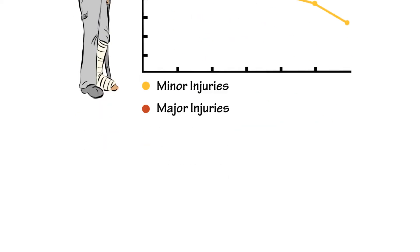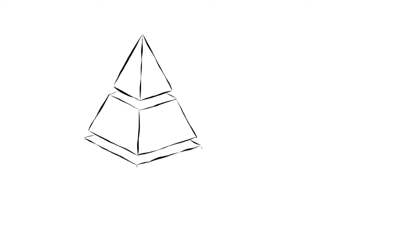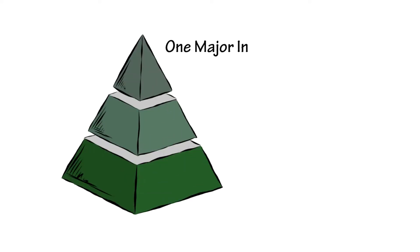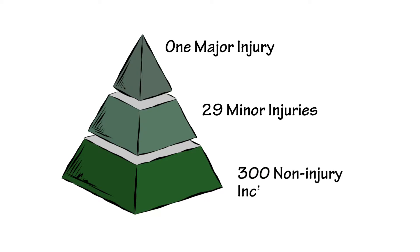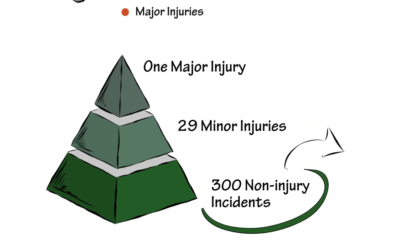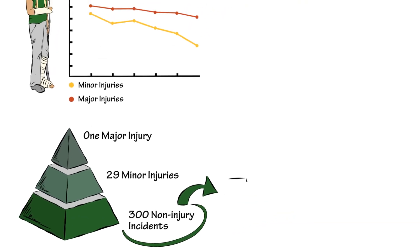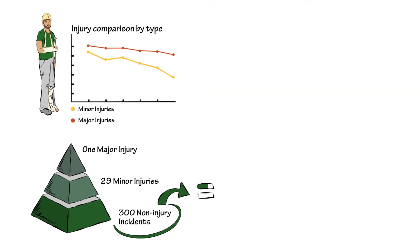You may be familiar with Heinrich's Pyramid. Heinrich theorized that for every major injury or fatality, there were 29 minor injuries and 300 non-injury incidents. Though this model has been very useful as a safety tool, it has a flaw: it treats all non-injury incidents as equal. But are they?